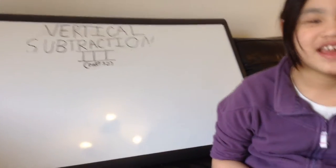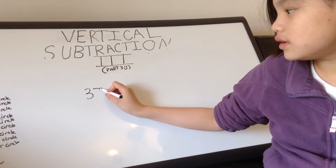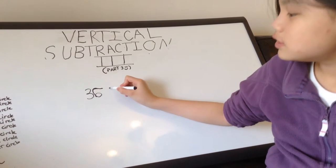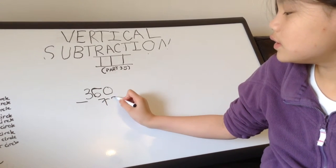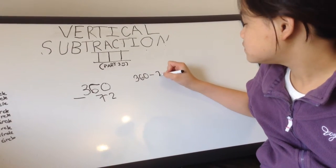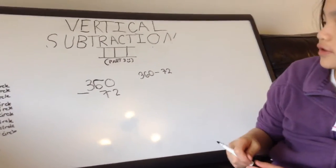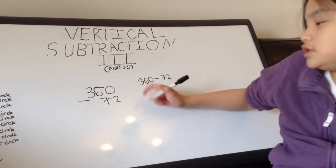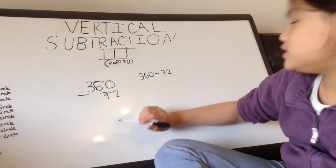Our sum will be 360 take away 72. Can be written this way too. Like that, which I normally do in my usual videos. So, we have to do 360 take away 72.